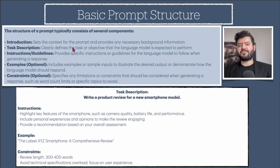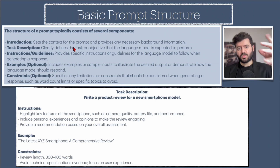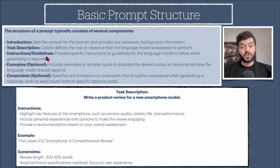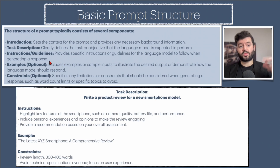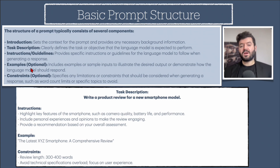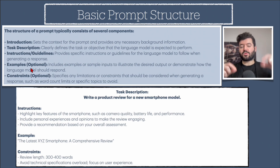Then comes task description — clearly define what you would like ChatGPT to do. Use action verbs: design, construct, compare, analyze. After that, provide instructions and guidelines: what do you need it to do, what to avoid, what language model to follow, or specific guidelines for generating the response.